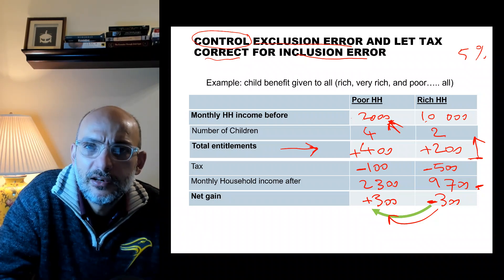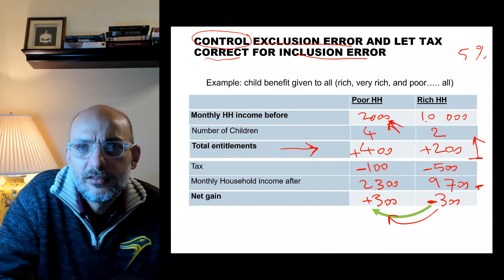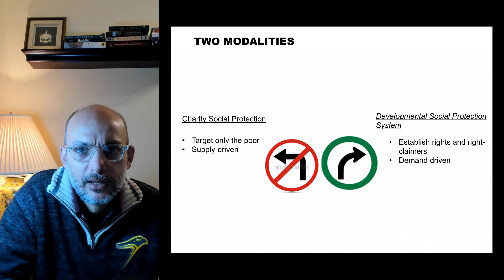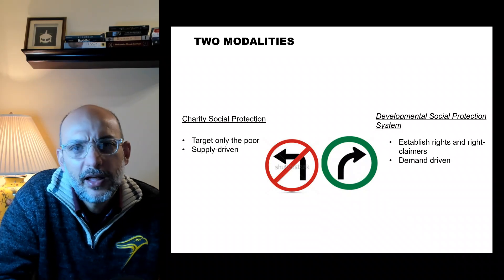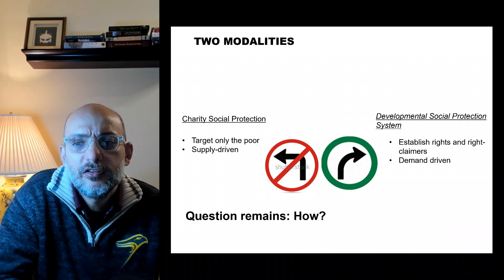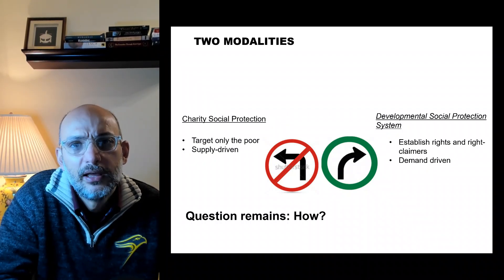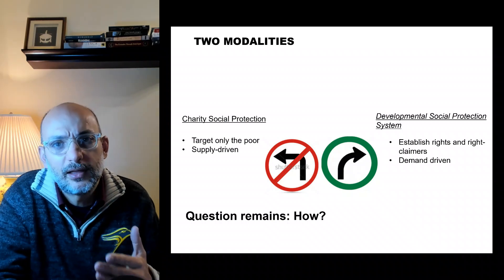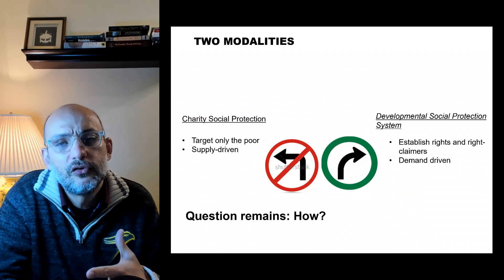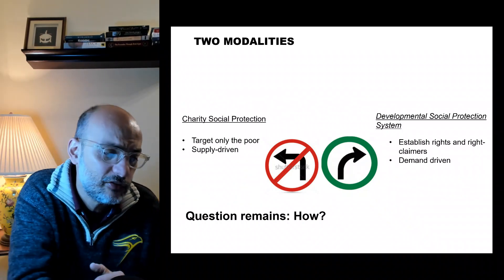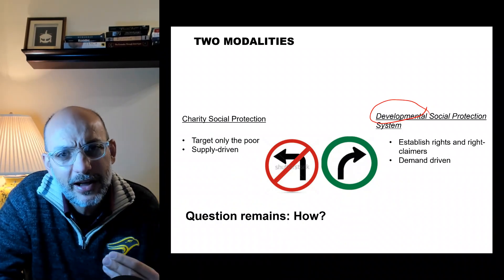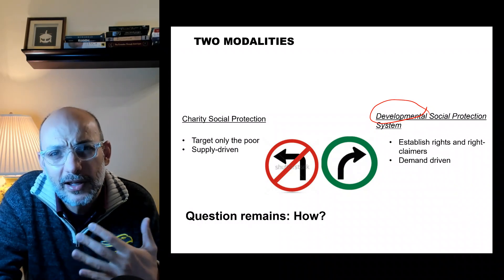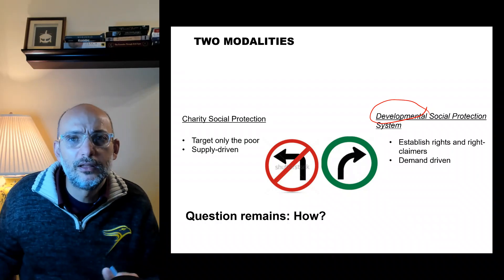Because exclusion error is very important to control, let's control it and let the tax system correct for the rich receiving money — let the tax system be designed to correct for the inclusion error. Next session we'll look at affordability: how we can do this in a way we can afford. Affordability is a choice. Even with little money, you can design your program to avoid exclusion error, division, and stigmatization.